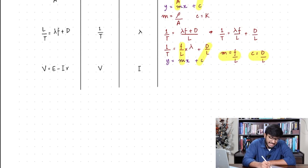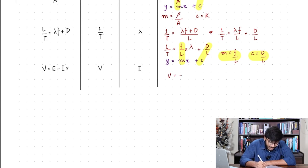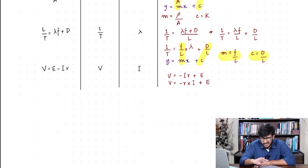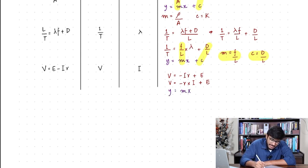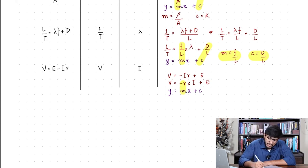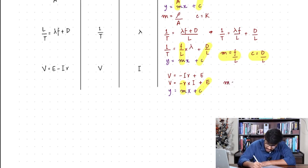Another equation: v equals e minus ir, with v on the y-axis and i on the x-axis. Rearranging and making sure i is isolated on the right: comparing with y equals mx plus c, the gradient is equal to minus r and the y-intercept is equal to e.